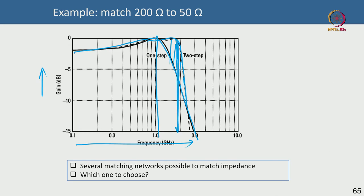That brings us to the conclusion of the Smith chart and impedance matching discussion. We have covered what is necessary to understand and appreciate the Smith chart, impedance matching, and how to implement these in transmission line configurations. There are many more techniques such as single-stub and double-stub matching, which you can explore in a dedicated microwave engineering course. This lecture gives you the flavor of what RF circuit designers do to transform device impedance to 50 ohm. Thank you for your time; in the next lecture we will introduce passive elements in RF circuits.